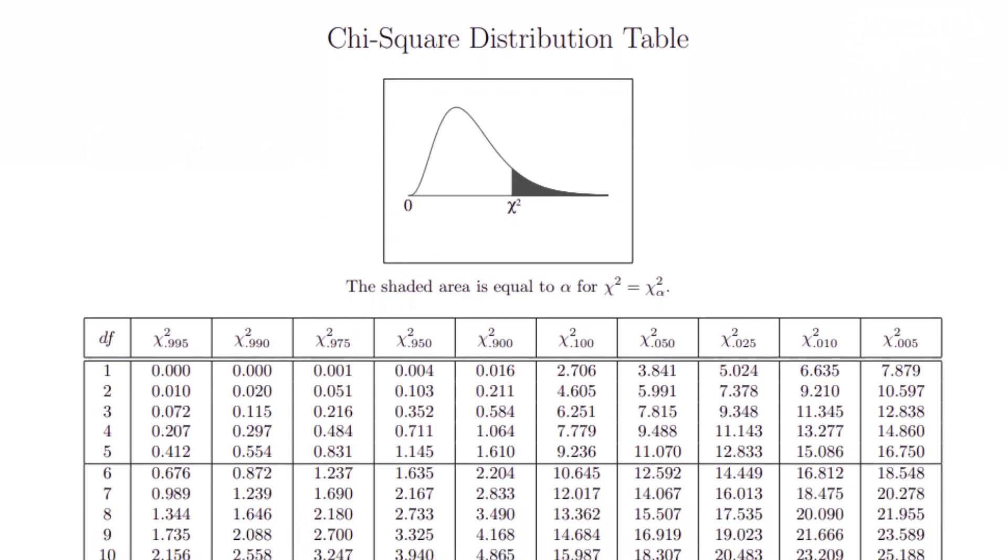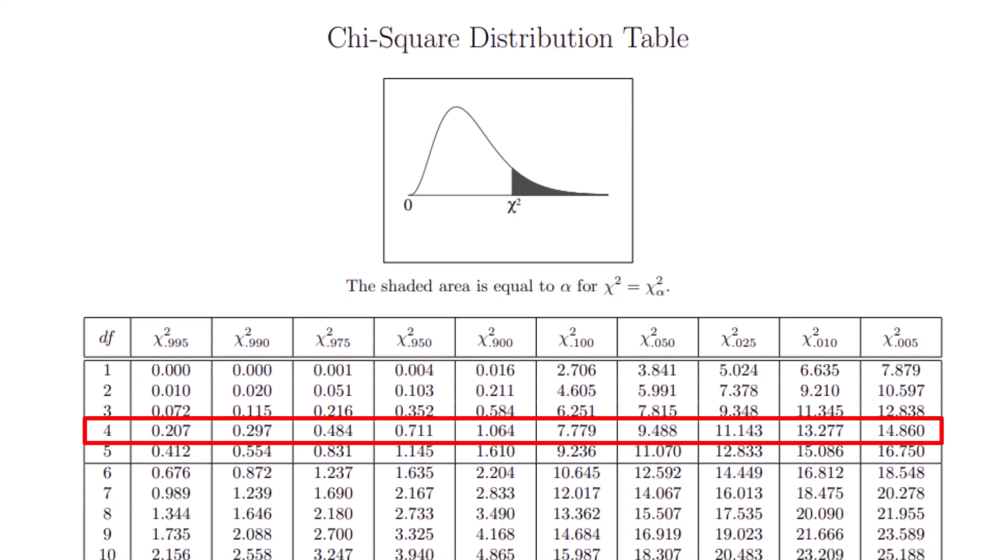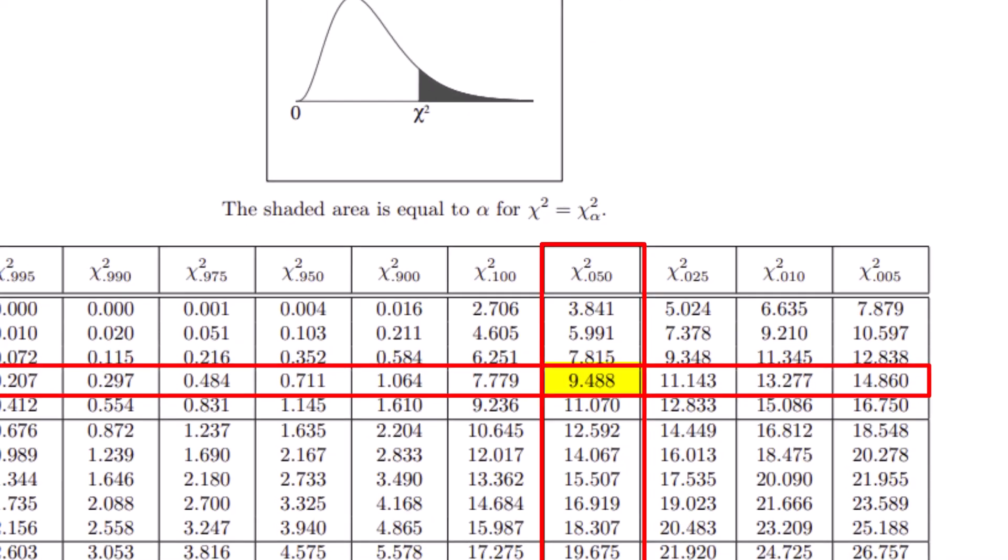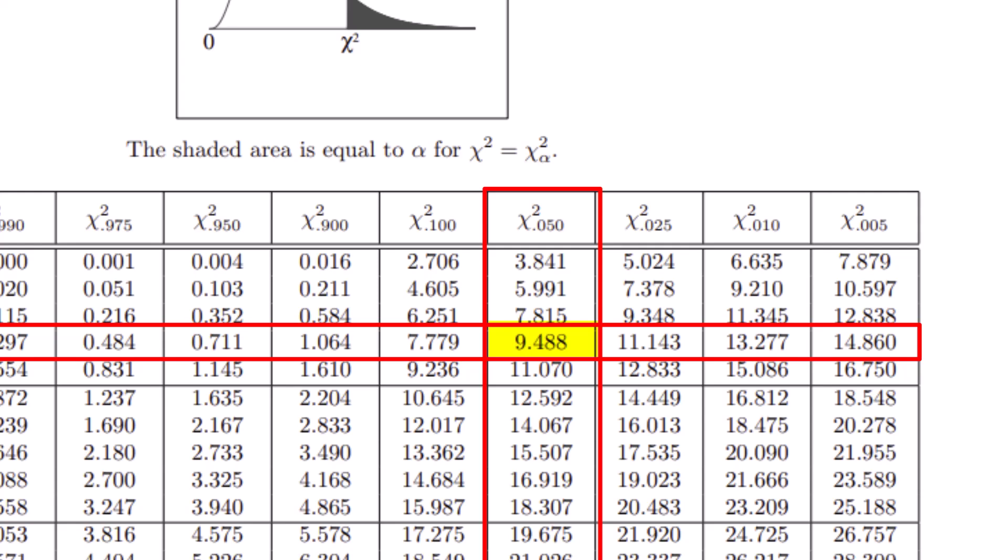Using this table I know that I've got four degrees of freedom so we're going to use that row and we've got 0.05 for our significance level. So using that column we end up with a chi-square critical value of 9.488. This is now the boundary for our rejection region.